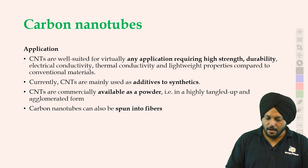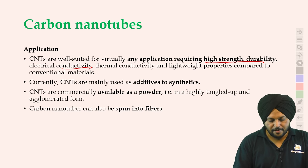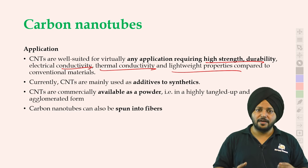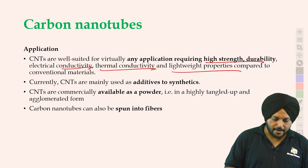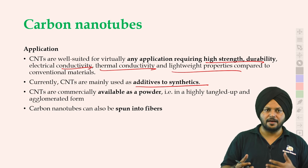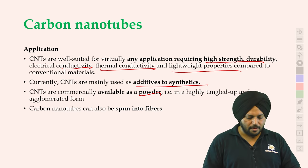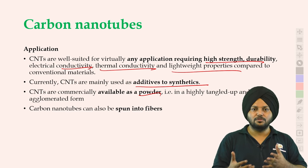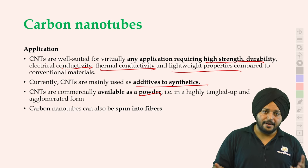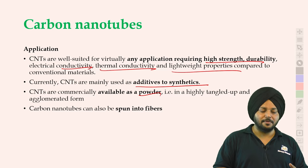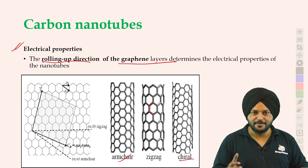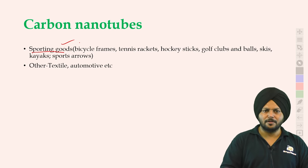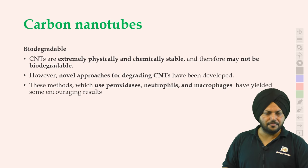Applications देखते हैं। High strength के कारण आजकल इसको additive के रूप में synthetic materials के साथ मिलाकर use किया जाता है। Normally यह powder की form में available होता है, fiber भी इससे बना सकते हैं। इसकी बहुत सारी hype create की गई है — इसकी application है क्योंकि जो properties हैं उनके हिसाब से applications बनाई जाती हैं। Supporting goods के साथ mix करके use किया जाता है — textile, automotive — काफी जगह use किया जाता है।